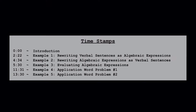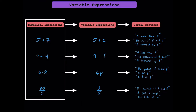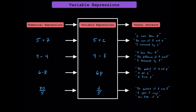Pause to check out the timestamps and feel free to jump around the video by using them in the description. While the last video focused on numerical expressions where we knew all the values of all the numbers, this video is all about understanding variable expressions. The key difference is that we don't know the value of every piece of the expression. When we have an unknown value or a value that can change, we use a variable to represent it.